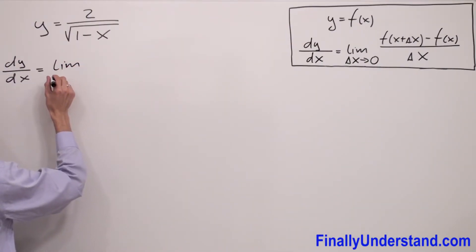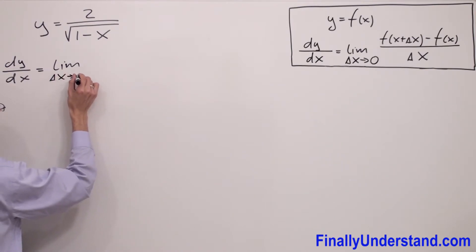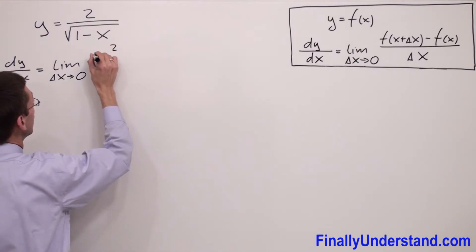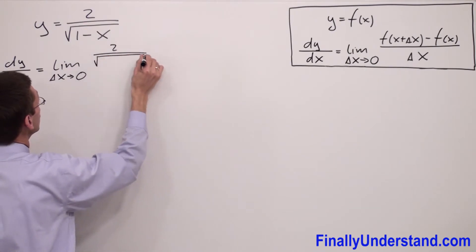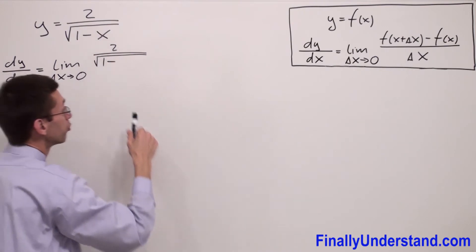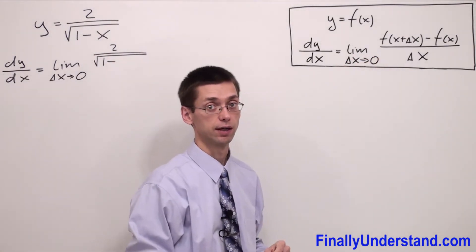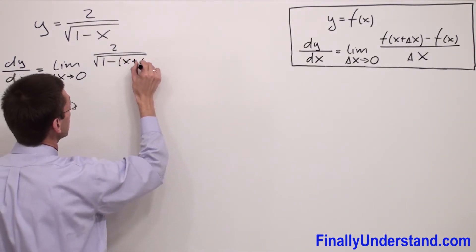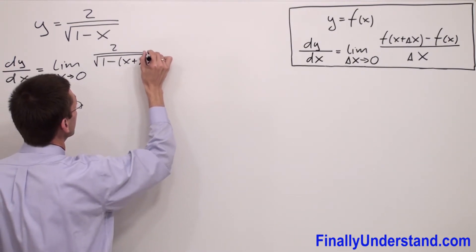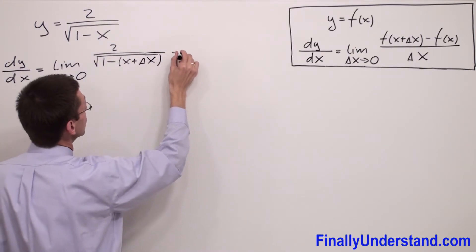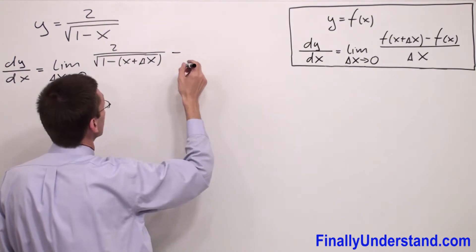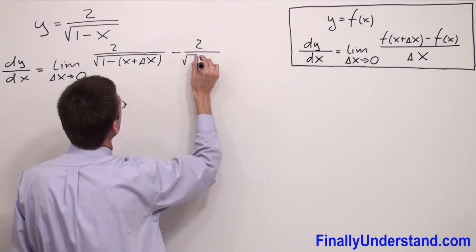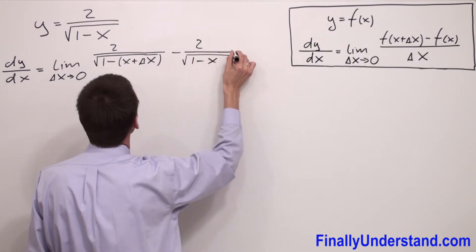We have the limit as delta x approaches zero. We are supposed to write 2 over square root of 1 minus, and instead of x we write x plus delta x.